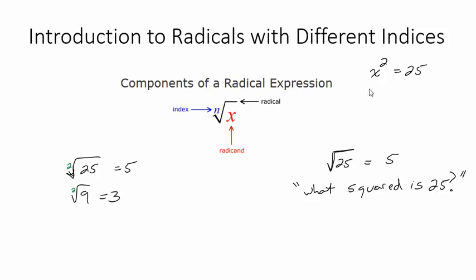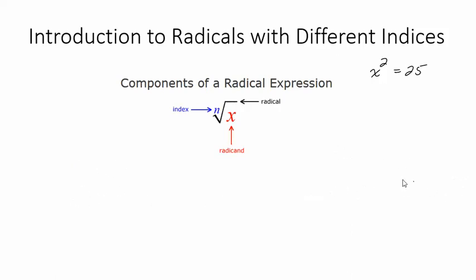But what I want to talk about in this video is different indices. Okay, so let's assume that we're pretty good at square roots, but what if I have a different number where that n is? What if the index is 3? So let's say I have this expression and I have a 3 where the index is. So what is this asking you? That's what you need to ask yourself.